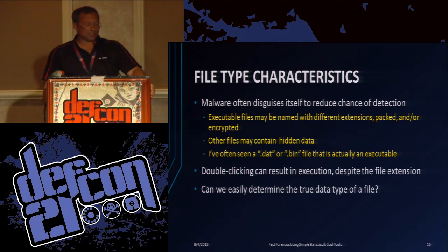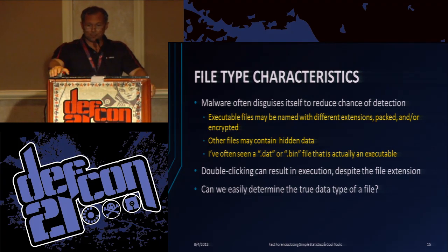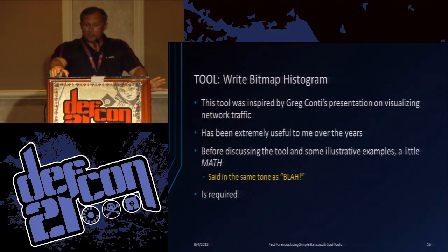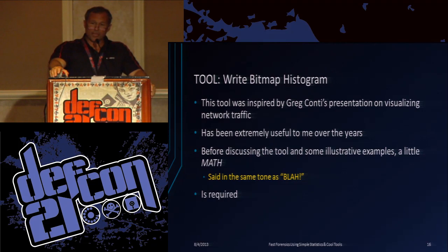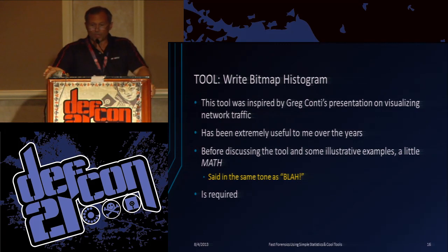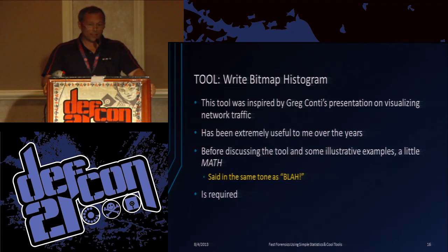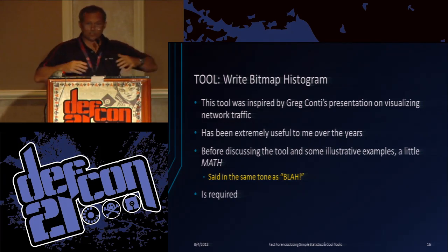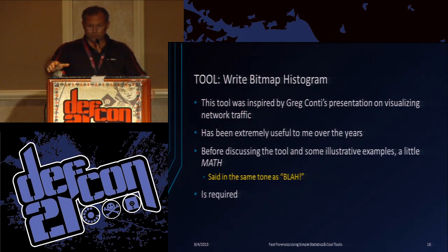File type characteristics — malware often disguises itself, may pack stuff in executables encrypted, and this can help detect that. The right bitmap histogram tool will do a few things. It can create a bitmap image, as you saw in the beginning — that was a bitmap image of Solitaire, one person recognized that probably as an executable. The chart on the right was a histogram, and that's a typical histogram for an executable. Before discussing the tools, you have to do a little bit of math. There are a lot of slides in this presentation, so once we get through the math, if we don't finish, it will be easy for you to figure out on your own.